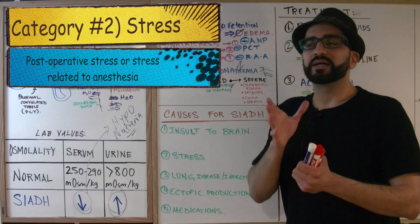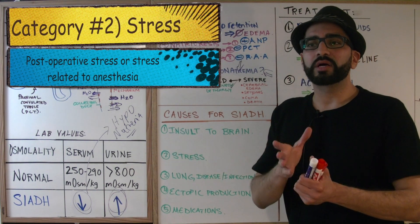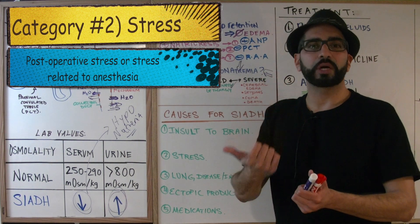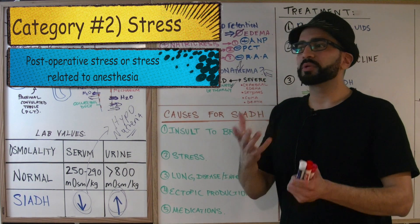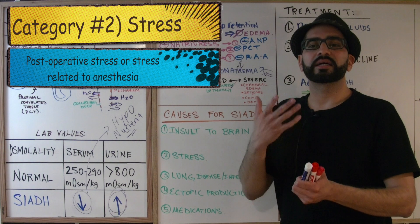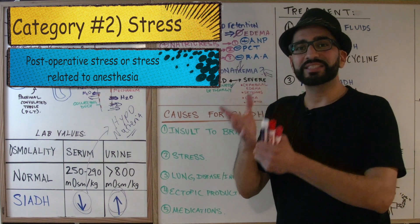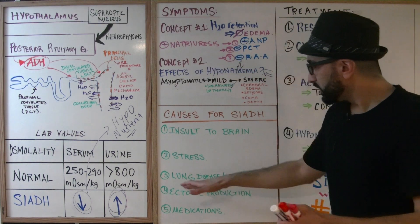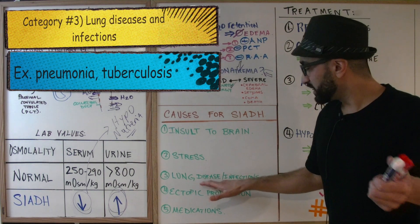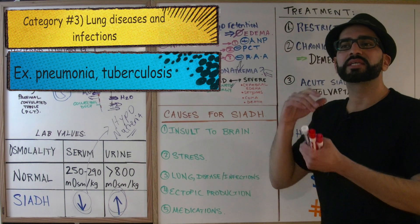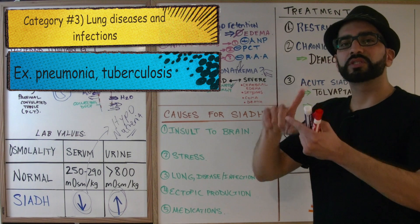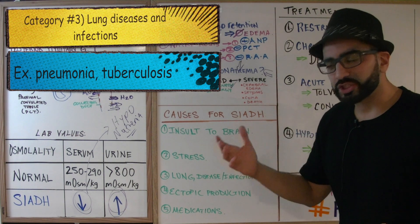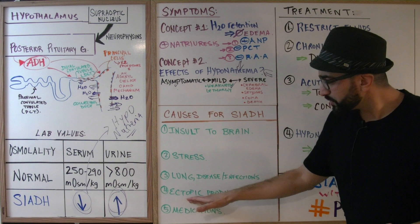The second category is extreme stress — post-operative stress, stress during anesthesia, and stress after procedures. The third category is lung diseases and infections, including tuberculosis and pneumonia, both of which can cause an increase in ADH secretion.